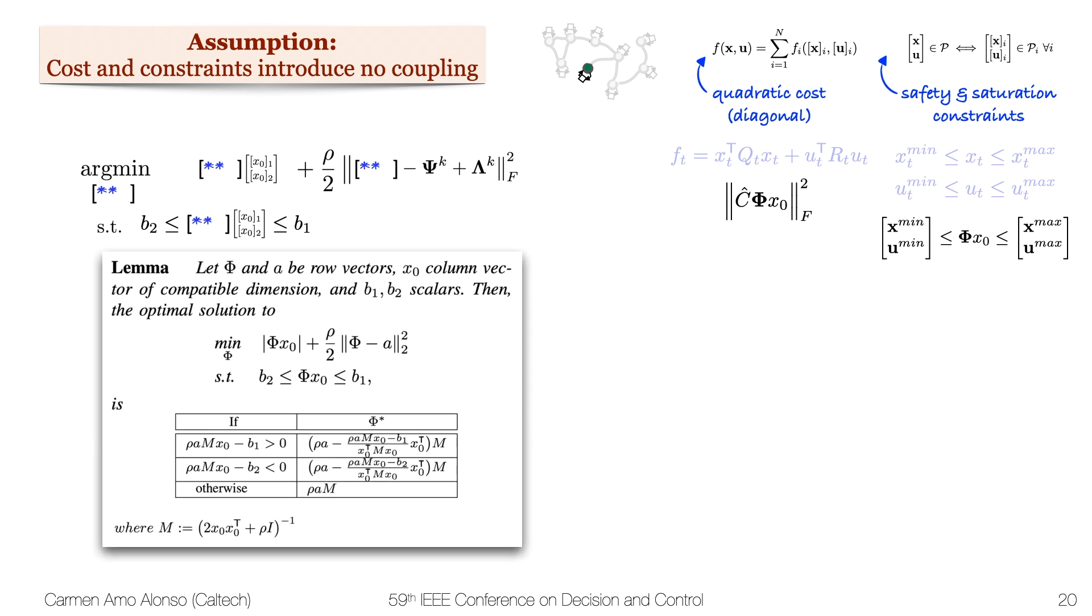And by the following lemma, the solution can be found in an explicit way, where we only split the space into three regions. The proof of this lemma can be found in the paper, and it simply relies on the KKT conditions and some algebra. But perhaps more interesting is to analyze the implications of this lemma into this MPC setting.